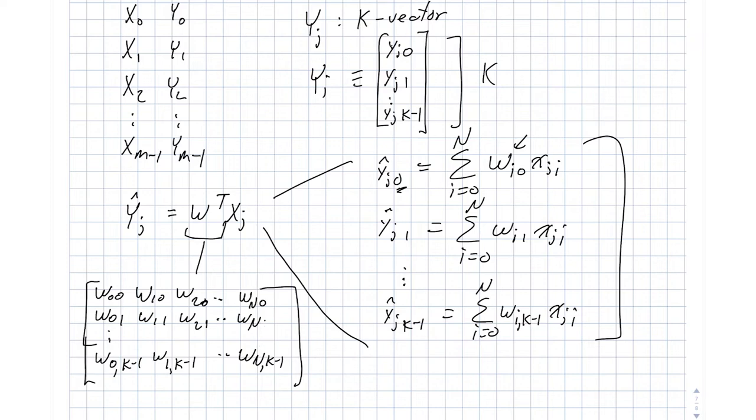So for those of you who have worked with linear algebra, if you take this w transpose and multiply it by a column vector, one of these xj's, you're going to end up with exactly a big yj hat that has, it is a column vector and has a total of k elements in the vector. I'll leave that as an exercise for you.